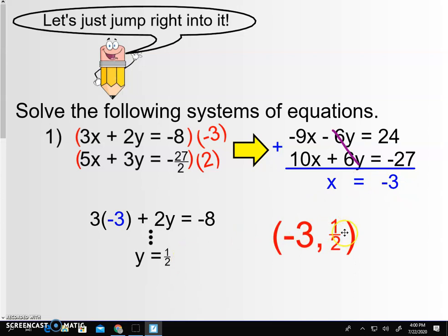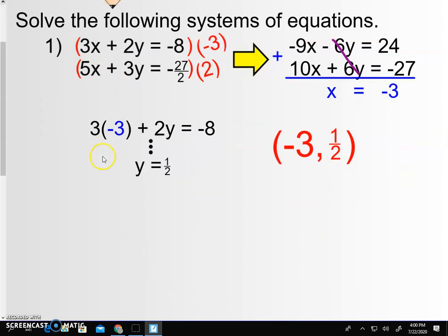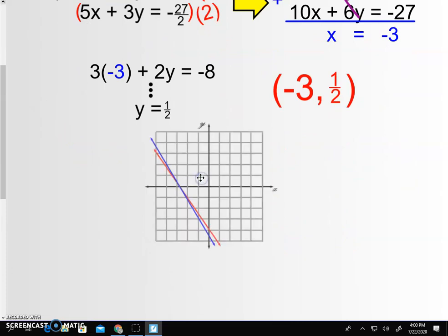What does that mean? Well, that means that if x is negative 3 and y is a half, that is the only value of x and y that makes both equations true. That means that if I graphed this, here's one equation, here's the other. These are the actual graphs of these two lines. The only point that lies on both lines is at negative 3, 1, 2, 3 comma a half. Right there, that point is the only one that works.